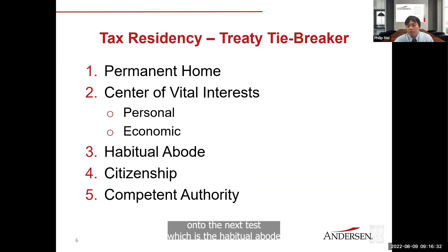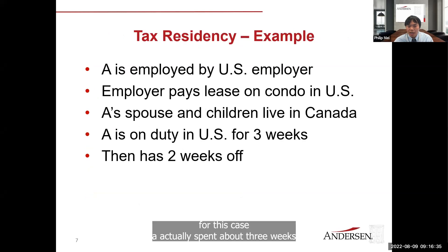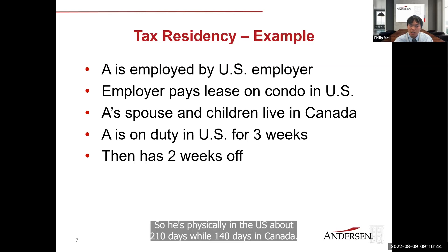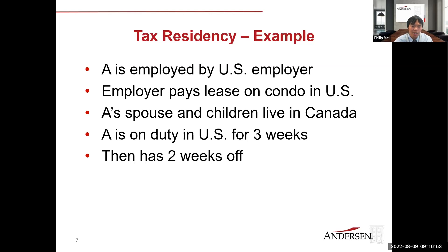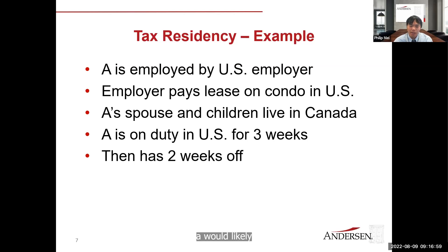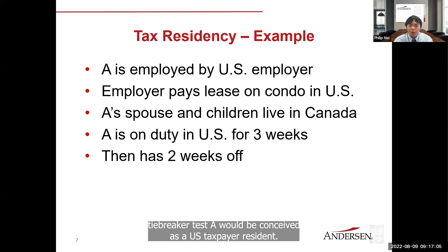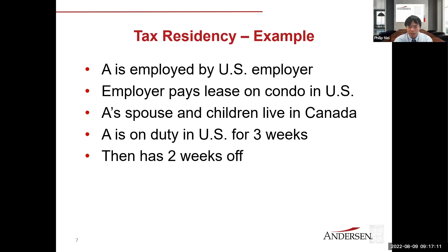Moving to the next test: habitual abode. A is spending three weeks out of every five in the U.S., totaling about 210 days in the U.S. versus 140 days in Canada. The difference between the two is significant and clear. Under the habitual abode test, A would likely have a closer tie to the U.S. and would be considered a U.S. tax resident rather than a Canadian tax resident. That is the likely conclusion based on all available facts.